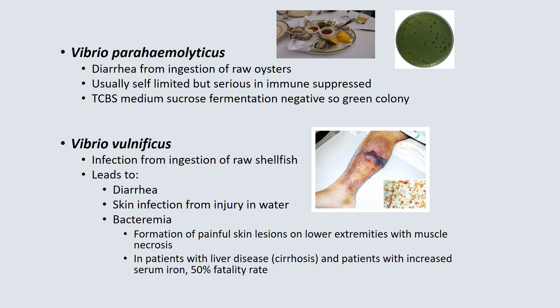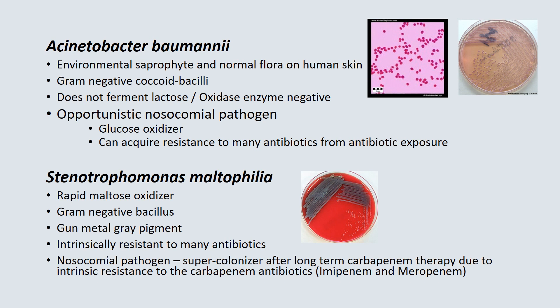Vibrio vulnificus is a very important Vibrio species, also acquired from ingestion of raw shellfish. It leads to diarrhea in some, but can cause serious skin infections from injury in water, or bacteremia — usually in patients with liver disease (cirrhosis) or increased serum iron. It causes very painful necrotic skin lesions on the lower extremities with massive muscle necrosis. This can be a very fatal disease if not treated rapidly.